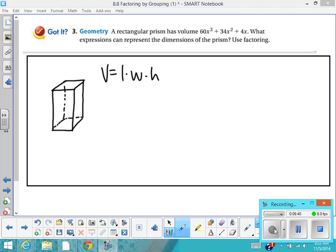And so it's basically three factors multiplied together to give me volume. And so that tells me that what I need to do is start with the volume, 60x³ + 34x² + 4x and factor it.